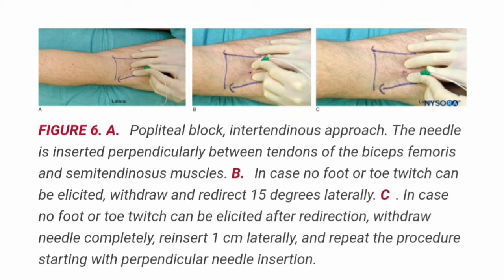The landmarks can be accentuated by asking the patient to flex the knee joint. This maneuver tightens the hamstring muscles and facilitates more accurate palpation of the tendons. The nerve stimulator should be initially set to deliver 1.5 mA current. When the needle is inserted in the correct plane, advancement should not result in any local muscular twitches. The first response to nerve stimulation is typically a foot twitch. The stimulating current is gradually decreased and the needle repositioned until twitches are still seen or felt at 0.2 to 0.5 mA.